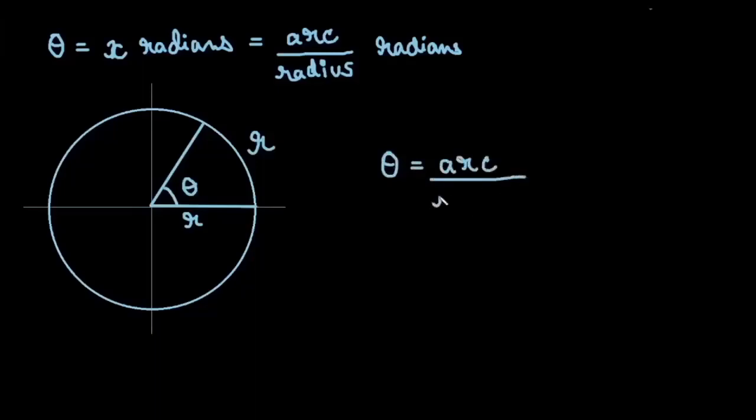Let the angle between them be theta. Now theta equals arc by radius radians. So r and r will cancel, which will give us 1 radian.